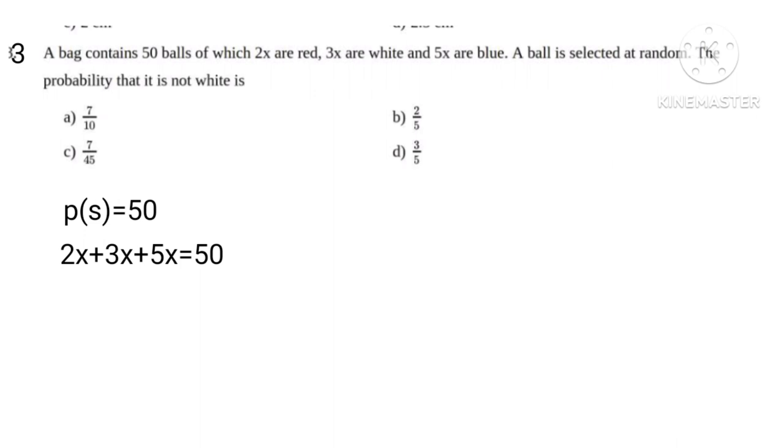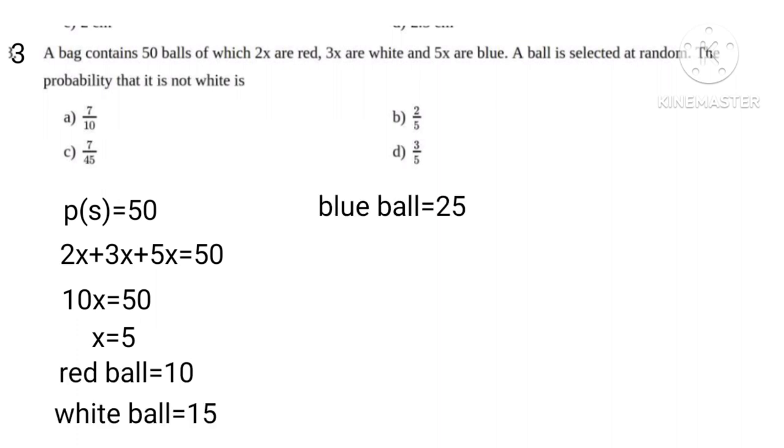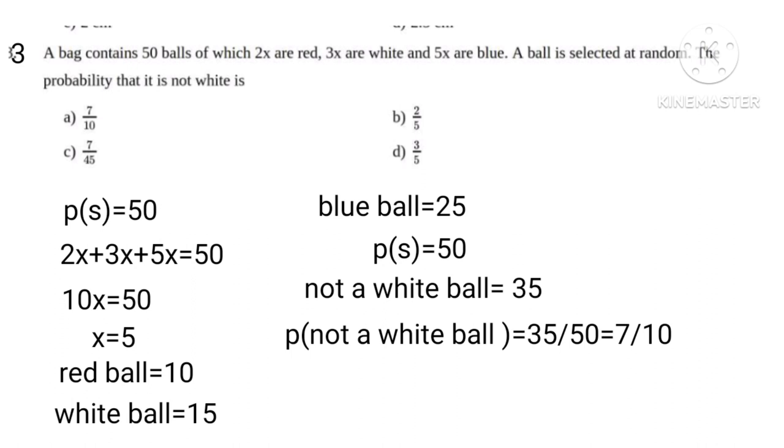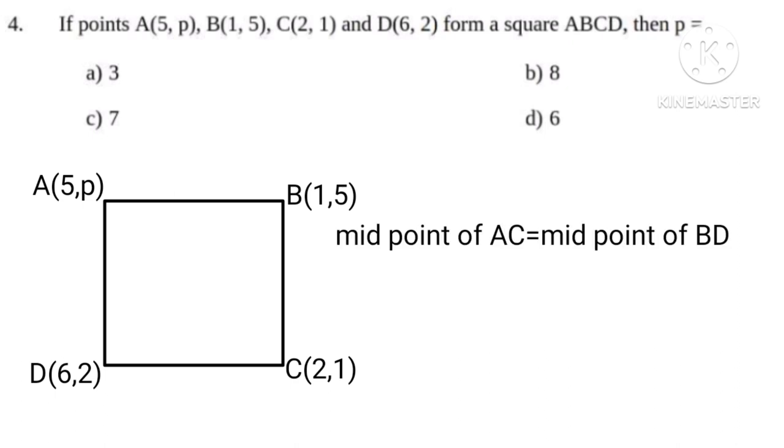PS equals 50. 2x plus 3x plus 5x equals 50, 10x equals 50, therefore x equals 5. Red ball equals 10, white ball equals 15, blue balls equals 25. Therefore, P not a white ball equals 35 over 50 equals 7 tenths.